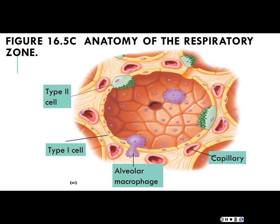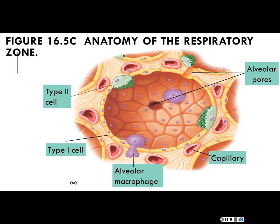Characteristic of your alveoli are the pulmonary capillaries surrounding them to allow for gas exchange. There are also pores in the alveoli — sometimes called pores of Kohn. Their job is to allow equilibration of gas pressure, keeping gas pressure equal throughout the alveoli. If pressure isn't equal, you'll mess with the gradient and have difficulty getting air in or out of the lungs.